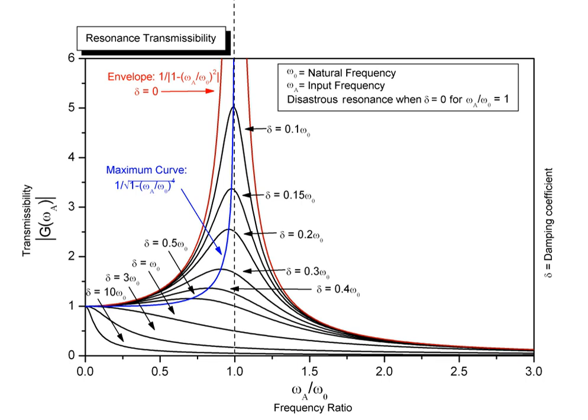Electrical resonance occurs in an electric circuit at a particular resonant frequency when the impedance of the circuit is at a minimum in a series circuit or at maximum in a parallel circuit, usually when the transfer function peaks in absolute value. Resonance in circuits are used for both transmitting and receiving wireless communications such as television, cell phones, and radio.